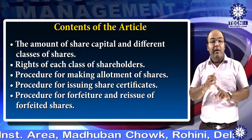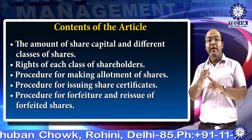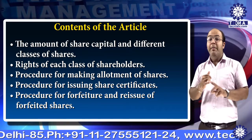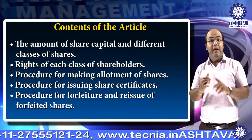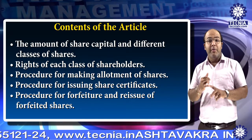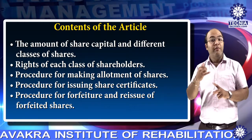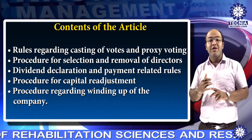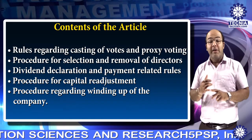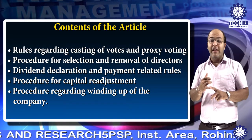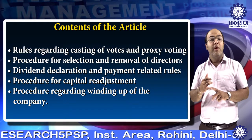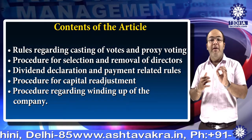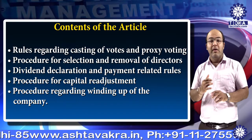The first one is amount of share capital. The second one is rights of each shareholder. The third one is procedure for making allotment of shares. The fourth one is procedure for issuing share certificates. The fifth one is procedure for forfeiture and reissue of forfeited shares. The sixth one is rules regarding casting of votes and proxy voting.